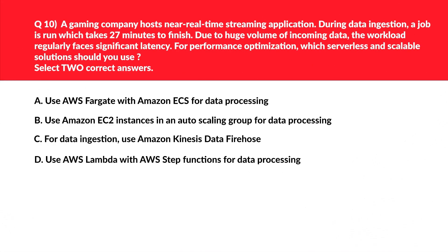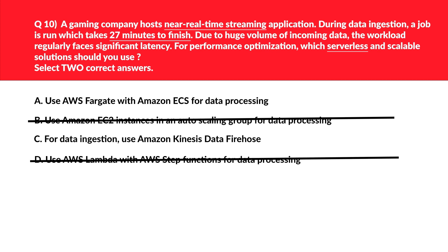This gaming-related question involves real-time processing. Between Fargate and EC2 instances, Fargate is serverless, so we reject option B (EC2) and keep option A (Fargate). Option D, Lambda, can run up to 15 minutes per execution, but the job takes 27 minutes, so Lambda is incorrect. Quick tip: whenever you see the keyword 'real-time,' Amazon Kinesis should come to mind. That brings us to option C, Kinesis, making the correct answers A and C. Please stay tuned for part 2 of the AWS Certified Solutions Architect Associate practice exam videos.